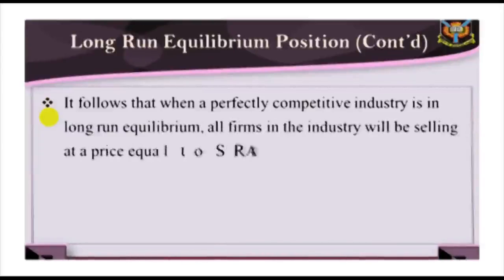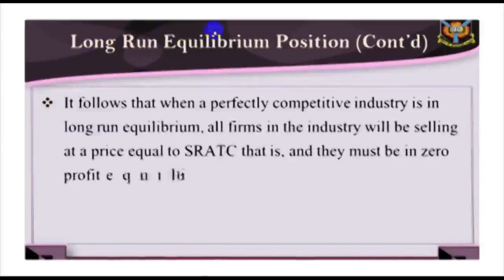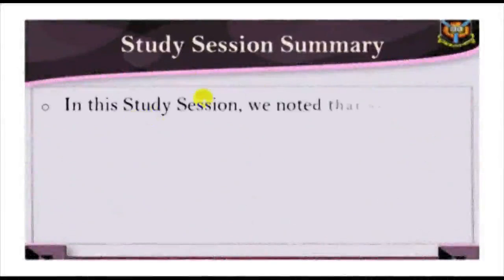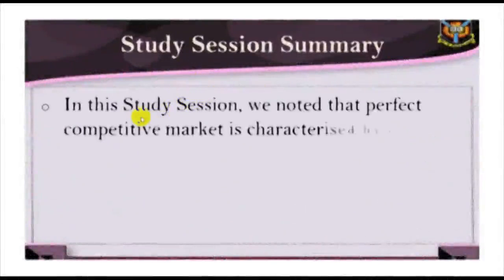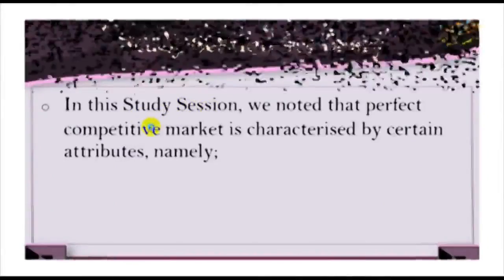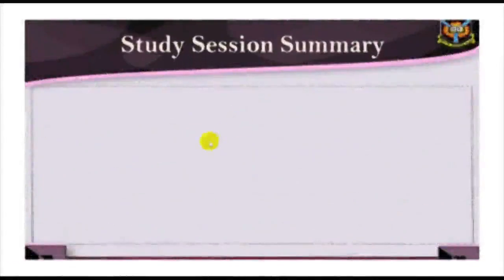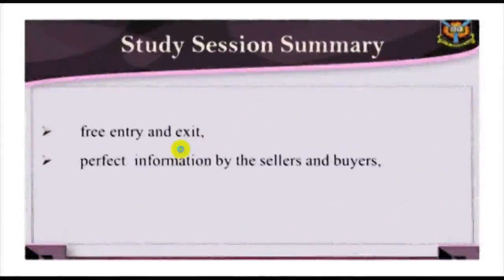In this study session, we noted that a perfectly competitive market is characterized by certain attributes which include free entry and exit, perfect information by sellers and buyers, large numbers of buyers and sellers, homogeneity of products sold, and no discrimination by seller or buyer. A perfectly competitive market is, however, very rare in real life. This is the end of Study Session 9. Thanks for listening.